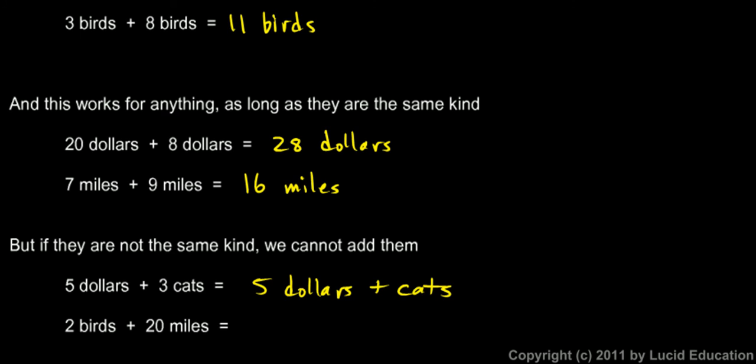You can't make it any simpler than that. You can't combine the five and the three. You can't combine this five and the three because they're not the same type of thing. Five dollars and three cats are two different kinds of things.